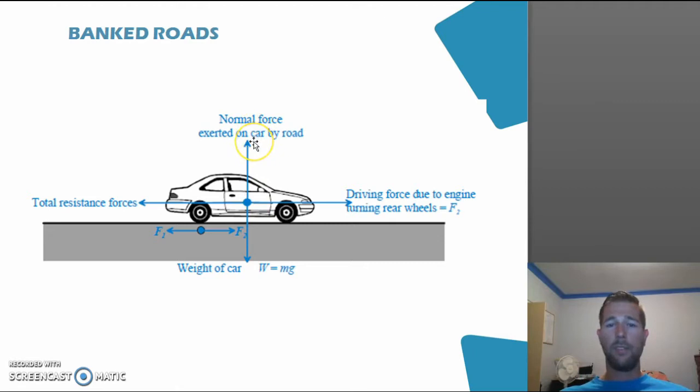So we call this the normal force. In this case it will be in the exact opposite direction as the force due to gravity, so pointing up. When we look at the car in its motion, there will be the resistant forces, such as air drag and friction losses due to the wheels with the contact on the road, and the forces in this direction will be the forces due to the wheels accelerating the car forwards.